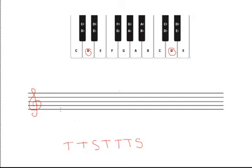Our D major scale will start on the note D. And like I said, it involves one note per letter name. So there's our D. Let's go up the musical alphabet. We need an E, F, G, A, B, C, and back to D.